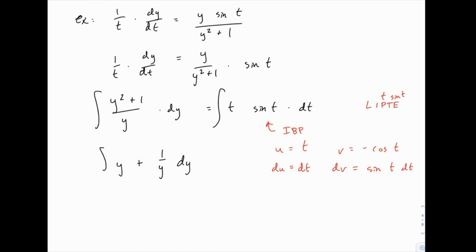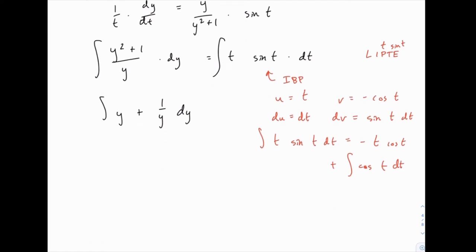And then to integrate we'll use the integration by parts formula which is u times v minus the integral of v du and since that's a negative cosine that'll turn that into positive and then we can integrate cosine of t and get sine of t plus c. So that's the answer to the second half of the problem.